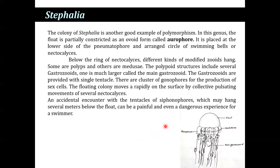Stephalia is another good example of polymorphism. In this genus the float is constructed as an inverted form known as the orophore, placed at the lower side of the pneumatophore. A circle of swimming bells or nectocalyces is present, and below their ring, different kinds of modified zooids — some polyps and others medusae — are arranged. The polypoid structures include several gastrozooids, with one much larger main gastrozooid, provided with single tentacles, and clusters of gonophores responsible for sexual cells. The colony moves rapidly on the surface by collective pulsating movements; accidental encounter with the tentacles, which may hang several meters below the float, can be painful and even dangerous for a swimmer.